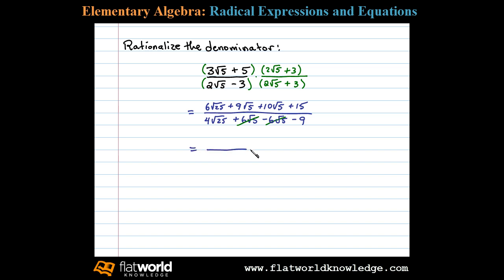Simplifying further, in the numerator I have 6 times the square root of 25, or 6 times 5, plus 9 square root of 5 plus 10 square root of 5, which adds up to plus 19 square root of 5, plus 15.